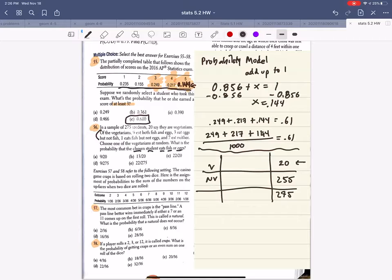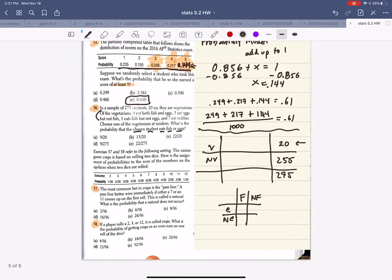Now it says, of the vegetarians, so just of these 20 people, it says 9 eat both fish and eggs, 3 eat eggs but not fish, 1 eats fish but not eggs, and 7 eat neither. Okay, so this is pretty complicated, isn't it? So it's eggs, not eggs, fish, not fish.